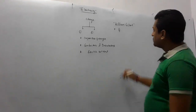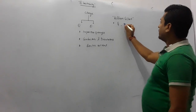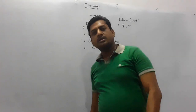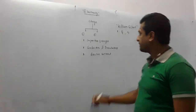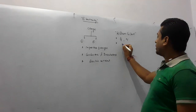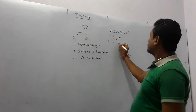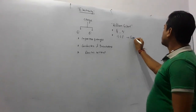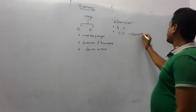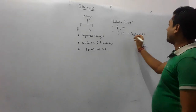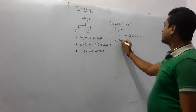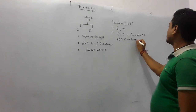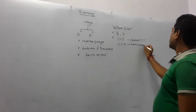The symbol of charge is denoted by Q — either capital Q or small q, it doesn't matter. Q is the symbol of charge. Regarding the unit of charge: the SI unit of charge is Coulomb, written in short as capital C. In the CGS system, the unit of charge is stat coulomb.